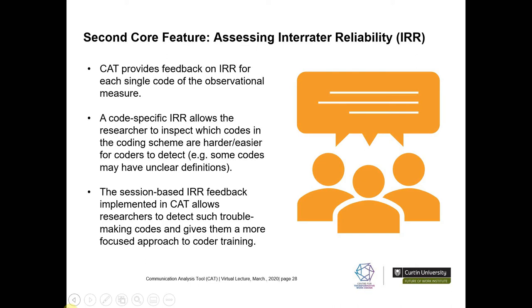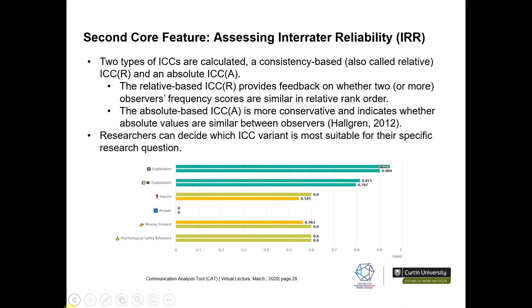The second core feature of the CAT software is that it enables researchers to assess inter-rater reliability. The CAT provides feedback on inter-rater reliability for each single code nested within an observational measure, presented in two ways: code-specific inter-rater reliability, which allows inspection of which codes are harder or easier for coders to detect; and session-based inter-rater reliability, which allows researchers to identify problematic codes and focus on them in coder training sessions. The CAT calculates two types of intraclass correlations — a consistency-based or relative ICC, and a more conservative absolute ICC. Researchers can decide which variant is most suitable for their specific research question.